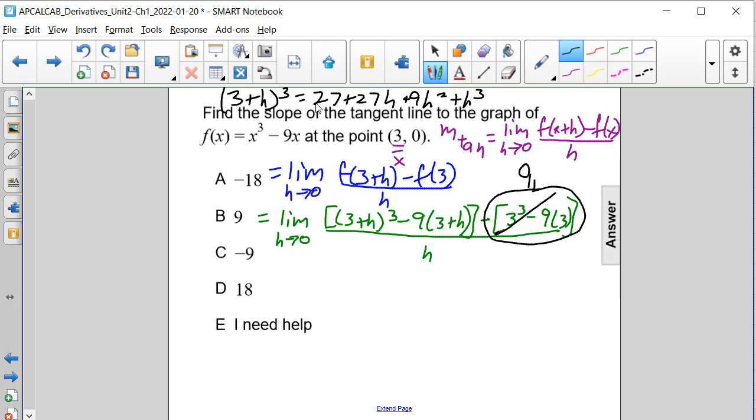So let's take this expression and substitute it in there. So we're going to be finding the limit as h approaches 0 of 27 plus 27h plus 9h squared plus h cubed minus 27 minus 9h.